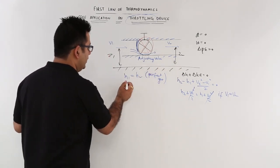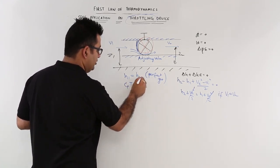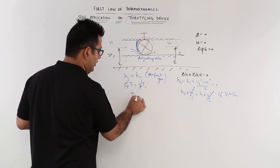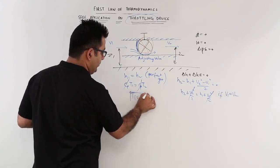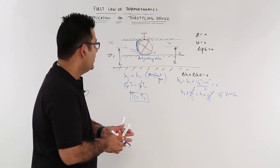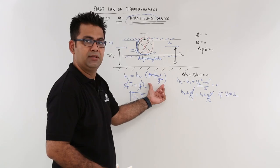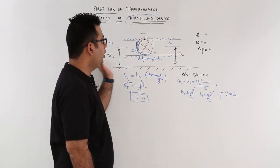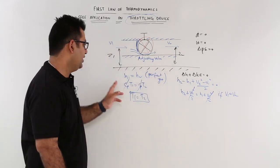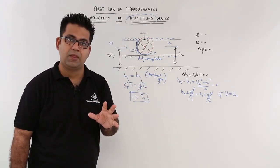Now if you apply the definition of enthalpy this is what you get. So Cp and Cp would cancel out. So T1 is equal to T2. So this gives you a very important observation to note down that in case of throttling process for a perfect gas the temperatures at inlet and outlet are same because there is no enthalpy drop across the throttling device.